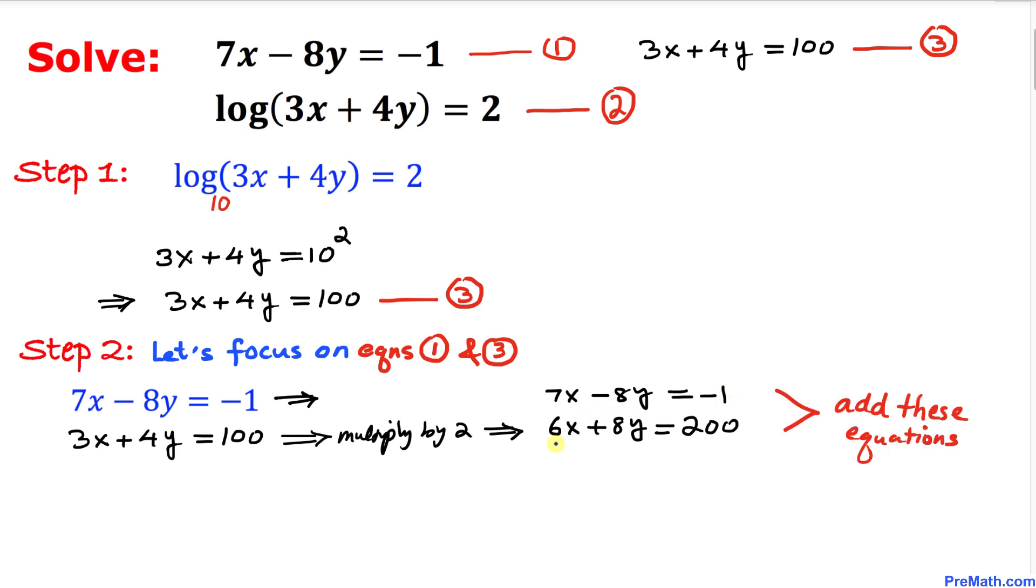Now let's add these two equations. If we add, negative 8y and positive 8y are gone. So we got 13x equals 199. Let's solve for x: 199 over 13.